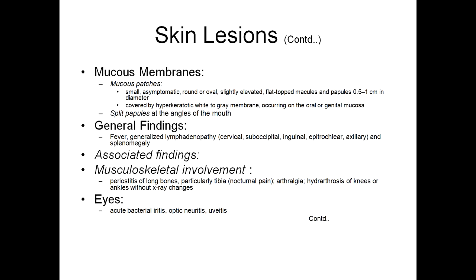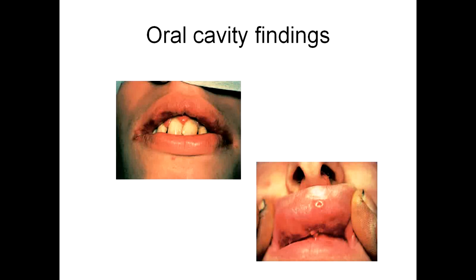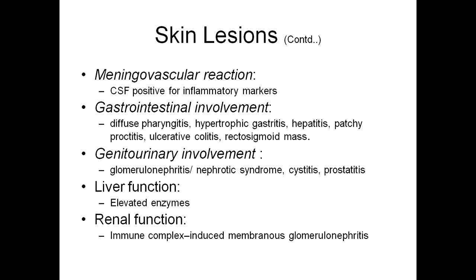General findings: fever, generalized lymphadenopathy — cervical, suboccipital, inguinal, epitrochlear, and axillary lymph nodes may be enlarged — and even splenomegaly may be seen. Musculoskeletal involvement may include periostitis of long bones, particularly the tibia, and arthralgia. Eyes may show acute bacterial arthritis, optic neuritis, and uveitis. These are oral cavity findings showing mucous patches on the inner labial mucosa.